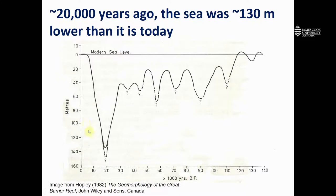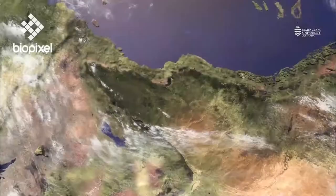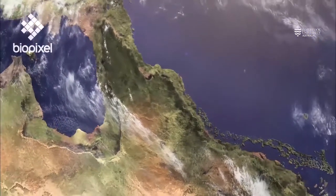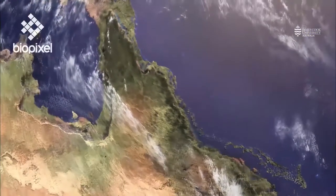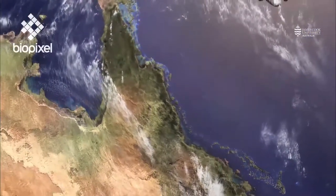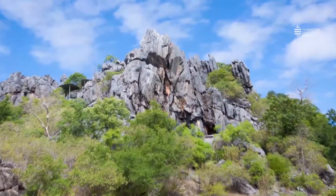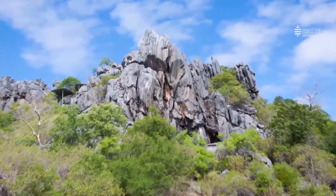About 20,000 years ago, we see that sea levels were much lower than they were today. And if you think about that, that means that the position of reefs is likely to have changed over time. So areas that are underwater now would have been emerged or out of the water 20,000 years ago.